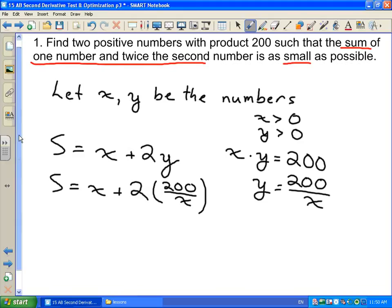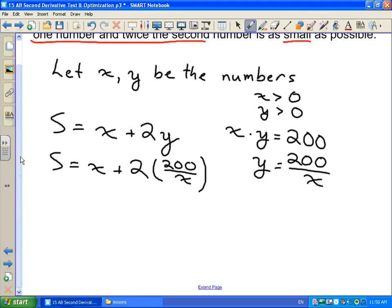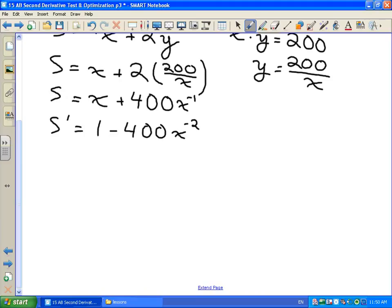Now we optimize it by taking the derivative and setting it equal to zero and trying to find our critical numbers. So let's put this in a form where we can take the derivative a little bit easier. I'm going to write this as x plus 400 times x to the negative 1. So our derivative is going to be 1 minus 400x to the negative 2. Now, let's set this equal to zero and solve for x.